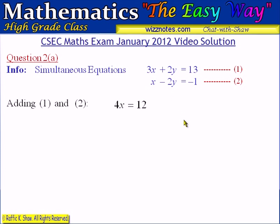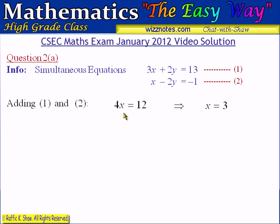The y values are eliminated. If we divide both sides by 4 to make x the subject, we realize that x is 3. Simply, 4 multiplied by 3 is 12, so x must be 3.